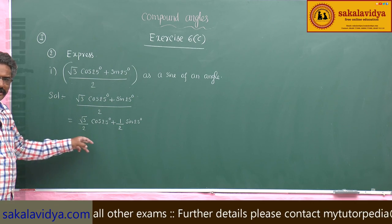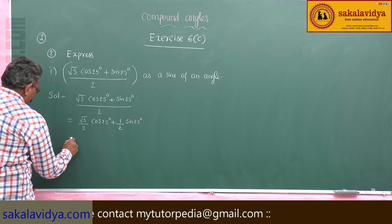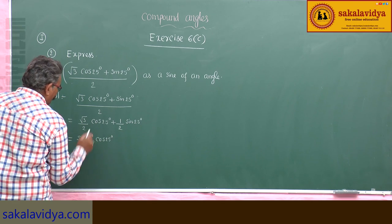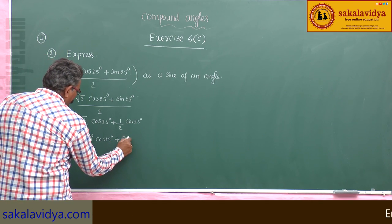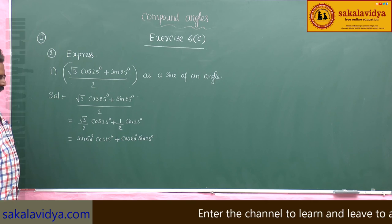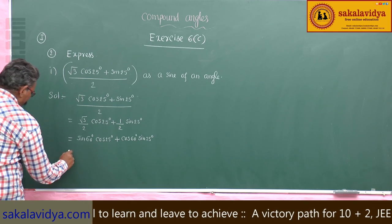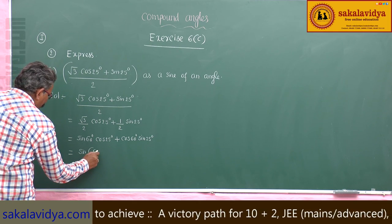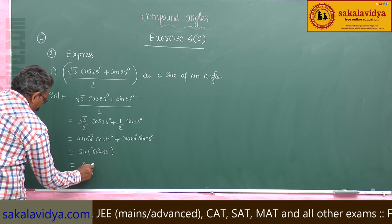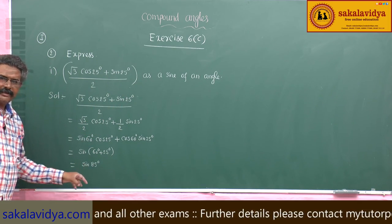Now, root 3 by 2 must be written in terms of sin, and 1 by 2 in terms of cos. The value of root 3 by 2 is sin 60, and 1 by 2 is cos 60. This is in the form of sin A cos B plus cos A sin B, which equals sin(A + B). So this is sin(60 degrees + 25 degrees), which equals sin 85 degrees. We have expressed it as a sine of an angle.